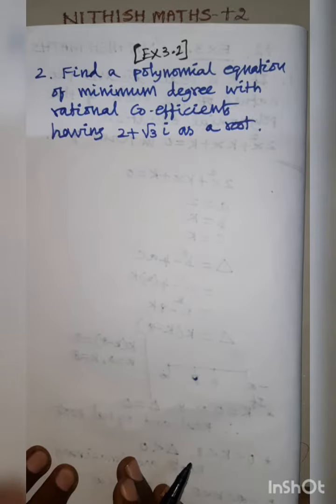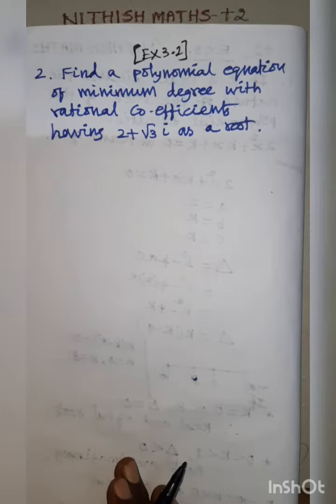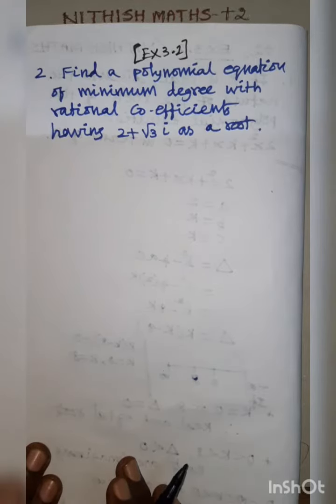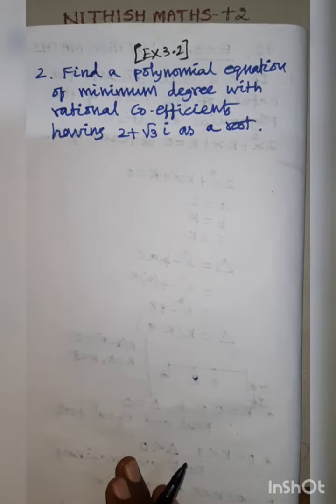Hi students, Nithish Maths Plus 2, Exercise 3.2, Question Number 2. Find a polynomial equation of minimum degree with rational coefficients having 2 plus root 3 i as a root.